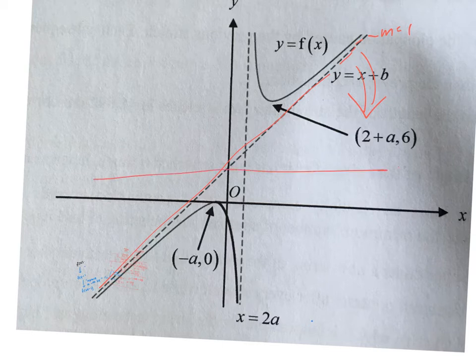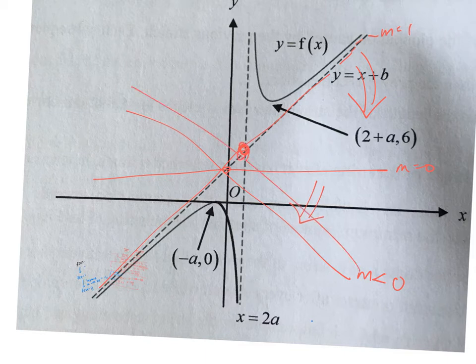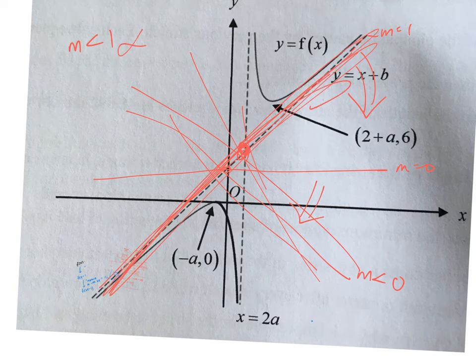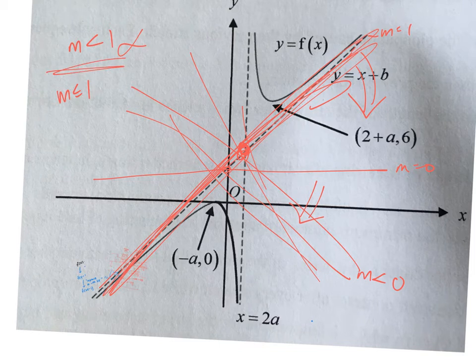If I go towards this direction it's like m equals 0; if I go down further it's like m is negative. I'm pivoting about this point. A lot of you were able to get the answer m less than 1, but you missed the fact that m could be equal to 1. The correct answer is m less than or equal to 1 for part 3. Most of you just got m less than 1 without including equality.